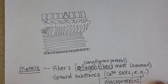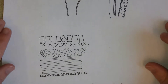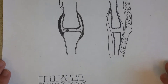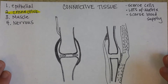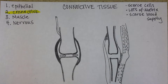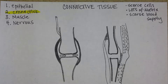We'll come back to that periodically throughout the quarter and flesh that out. First let's talk about the different kinds of cartilage, because cartilage is always connective tissue.